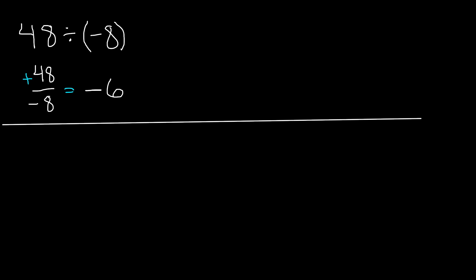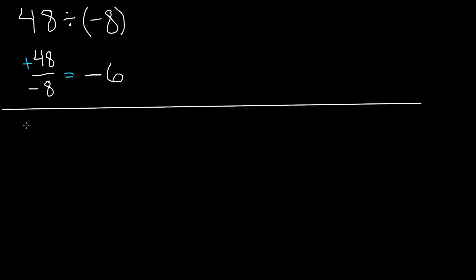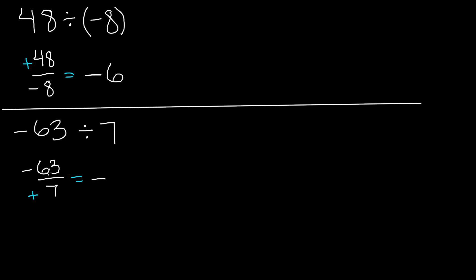Now let's do another problem. We have negative 63 divided by 7. We're dividing a negative by a positive, so in fraction form: negative 63 over positive 7. Remember, whenever you divide two integers with different signs, you get a negative quotient. So 63 divided by 7 gives us 9 — our quotient is negative 9.